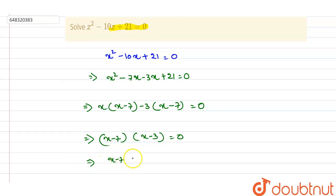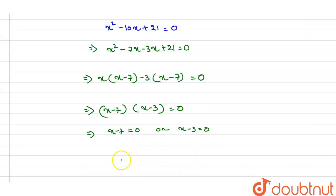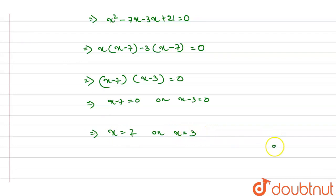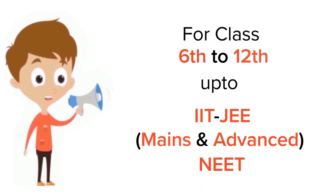Therefore, x minus 7 equals 0 or x minus 3 equals 0, which implies x equals 7 or x equals 3. That is the answer. For class 6 to 12, IIT JEE, and NEET level — trusted by more than 5 crore students.